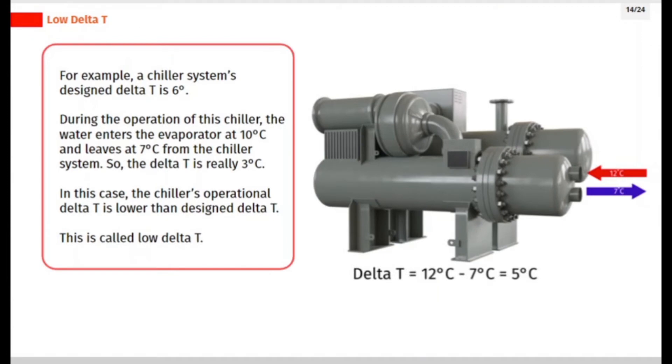For example, a chiller system's design delta T is 6 degrees. During the operation of this chiller, the water enters the evaporator at 10 degrees Celsius and leaves at 7 degrees Celsius from the chiller system, so the delta T is really 3 degrees Celsius.